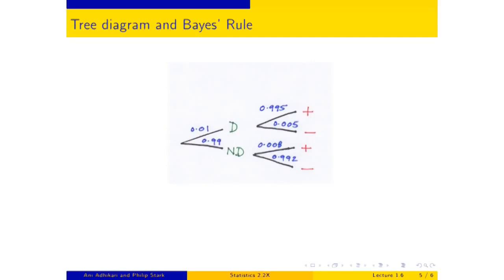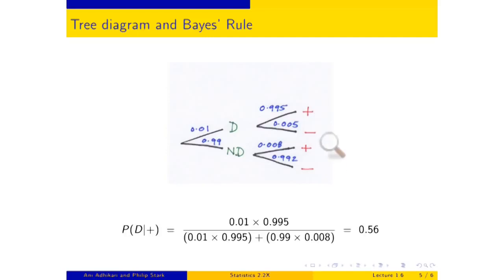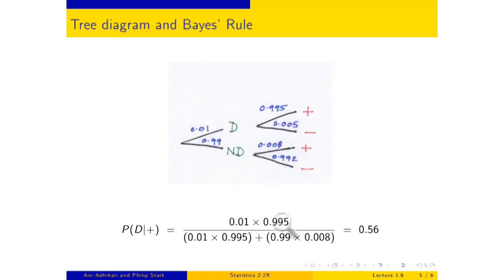The question was: we've picked this person at random, they've been tested positive, and they're in one of the plus branches. What is the chance they actually have the disease? The chance they're in the top branch given they're in one of the two plus branches: the denominator is 0.01 times 0.995 plus 0.99 times 0.008. The numerator is 0.01 times 0.995. When you do the calculation, you get 0.56.